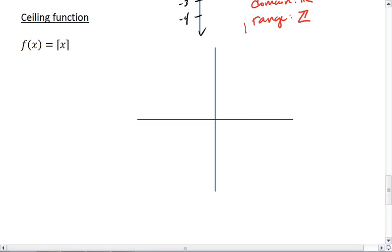so say I plug in 6.5, the ceiling function gives me back the closest integer that is above 6.5. So that would be 7.